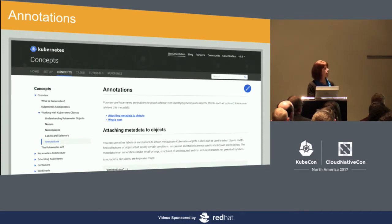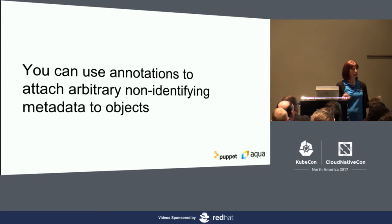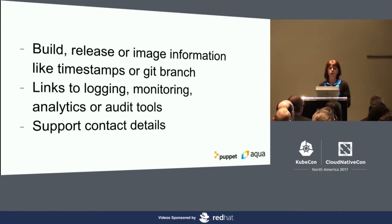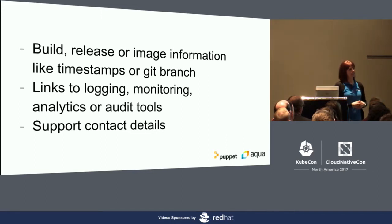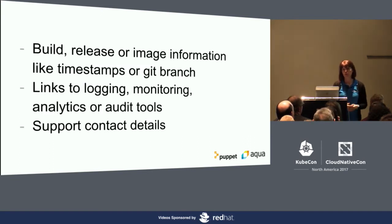The other kind of metadata Kubernetes supports is annotations. This is much more free-form data of your choice that you can attach to a resource — pretty much anything you want can go into an annotation. Examples include information about the software you're running, links or references to things related to that resource, perhaps links to where the logs go or where the audits go, and even things like who is supporting this particular resource, or who do you contact when this resource goes away.